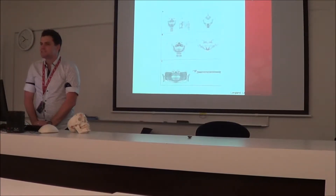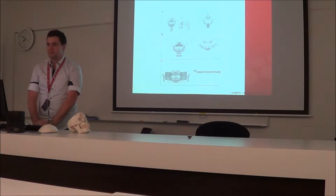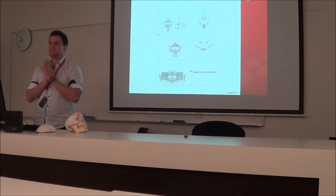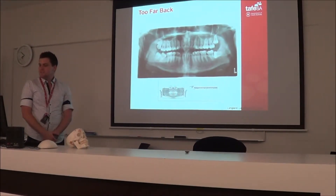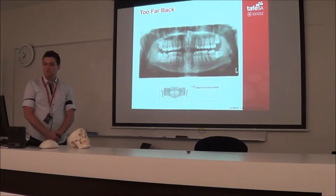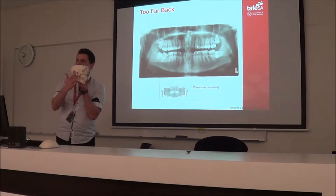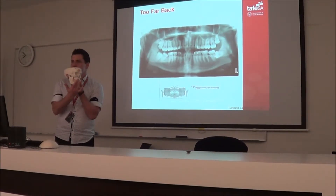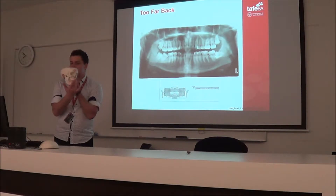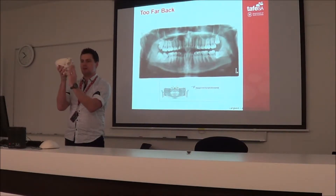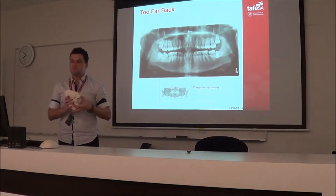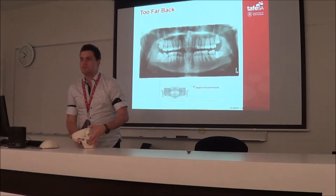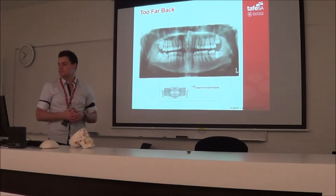What do you reckon is going to happen with too far back? They're going to magnify — they're going to get wider, because again the object-film distance increases. So when we look at too far back, the focal trough line is meant to be between the two and the three, but the patient is too far back, placed behind the focal trough. That means the red light will sit in front of the incisors, so the distance between the film and the focal spot increases — the object-film distance increases.